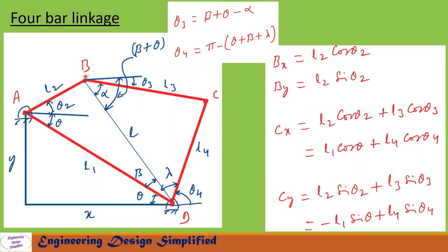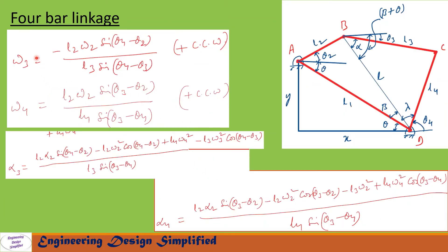Now let us write position equations. The position of B is: Bx = l2·cos(theta2), By = l2·sin(theta2). The position of C is: Cx = l2·cos(theta2) + l3·cos(theta3) = l1·cos(theta) + l4·cos(theta4), and Cy = l2·sin(theta2) + l3·sin(theta3) = −l1·sin(theta) + l4·sin(theta4), taking A as the origin. Using these equations we can find positions of B and C for any given theta2.